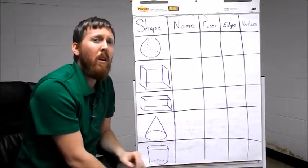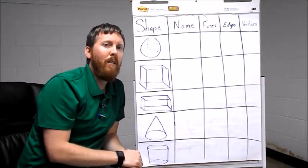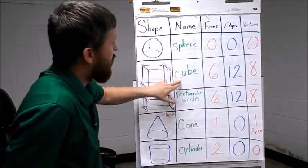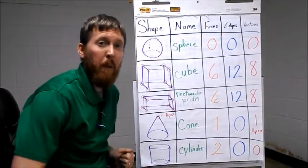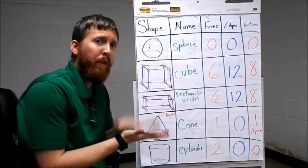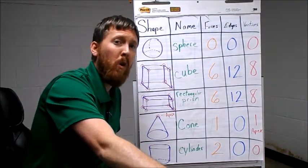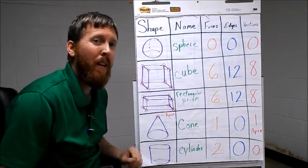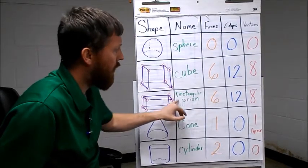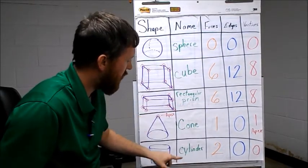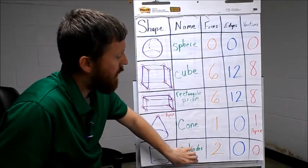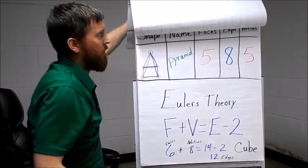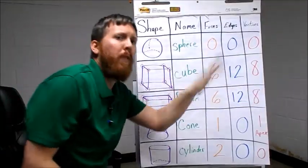Let's come back to this when I have it all completed and filled out. Now I'm back and I have this completely filled out. We've got the names: sphere, cube, rectangular prism, cone, cylinder, and pyramid. The faces are the flat parts - if I lay it on a table without rolling, will it stand flat in the air? A sphere does not have any faces, a cube has six, a rectangular prism has six, a cone has one.